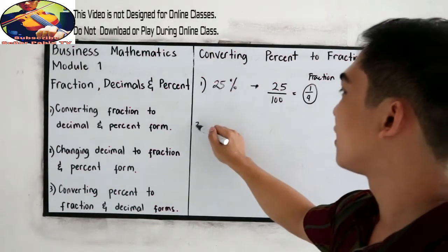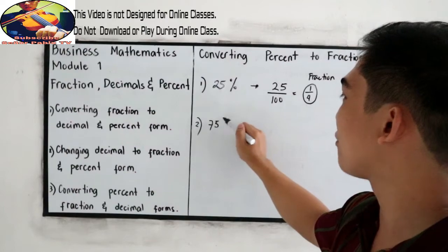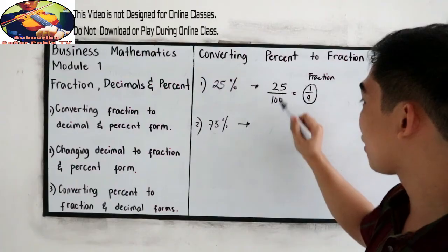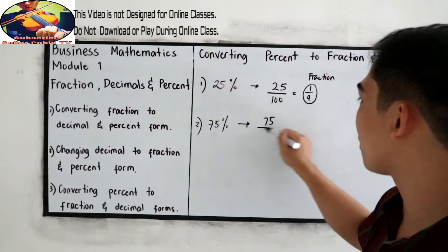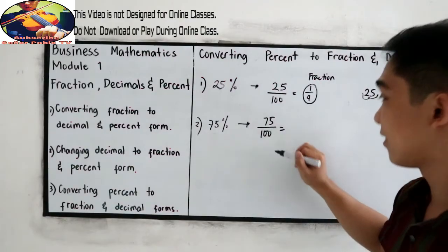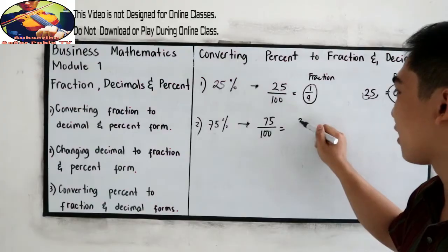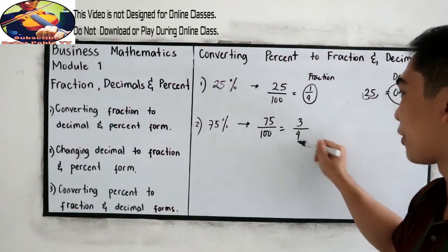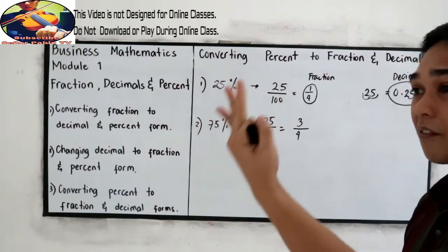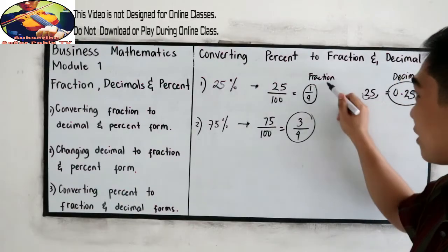Now, 75%. Converting 75% into fraction — we have 75 over 100. Reducing to lowest terms: 25, 50, 75 goes into 25, 50, 75, 100 — so we divide and get 3 over 4. That will be the fraction form.